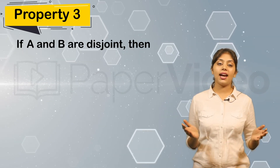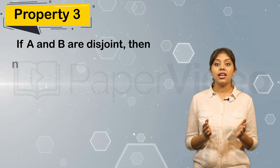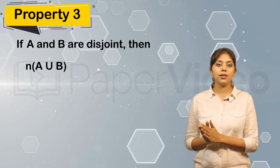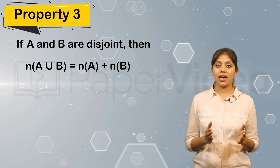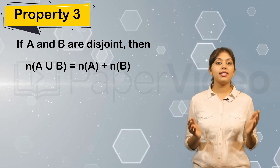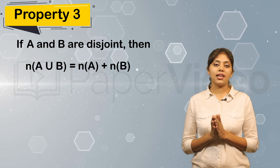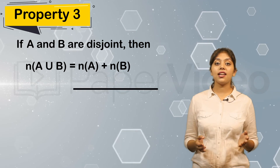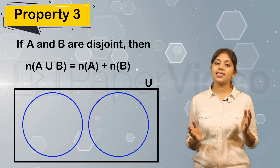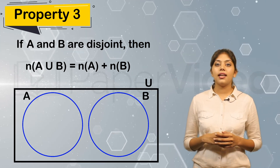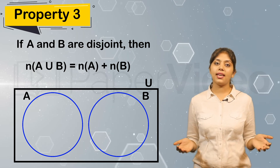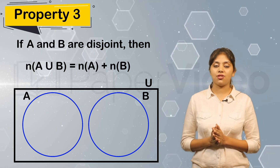The third property says that if A and B are disjoint sets, then the cardinality of the union of sets A and B is equal to the sum of the individual cardinalities of set A and B. Let us understand this property with the help of a Venn diagram. Consider a Venn diagram of two disjoint sets A and B. If we look at the diagram, the cardinality of the intersection of sets A and B is 0 because the sets are disjoint.